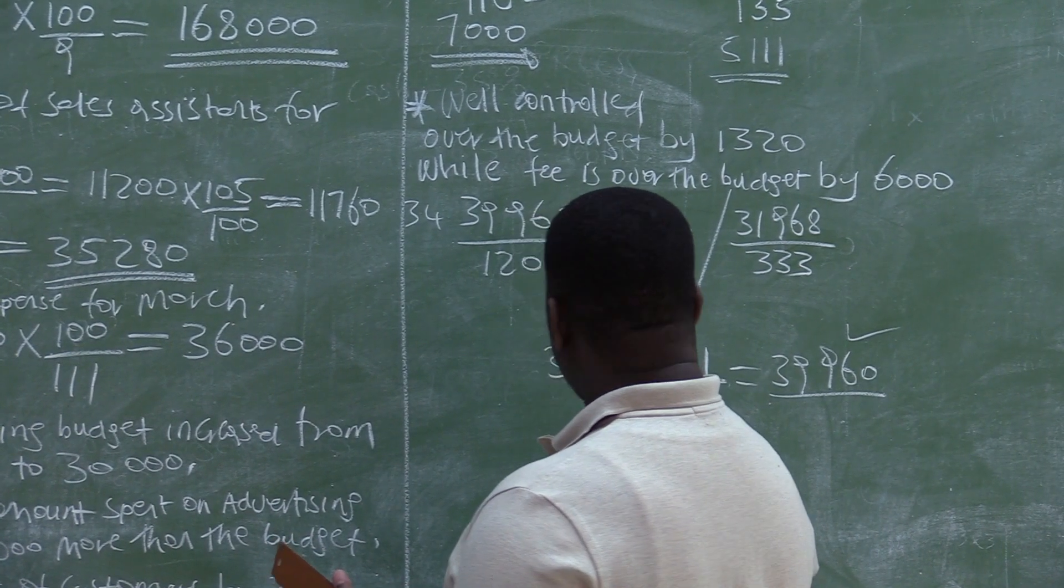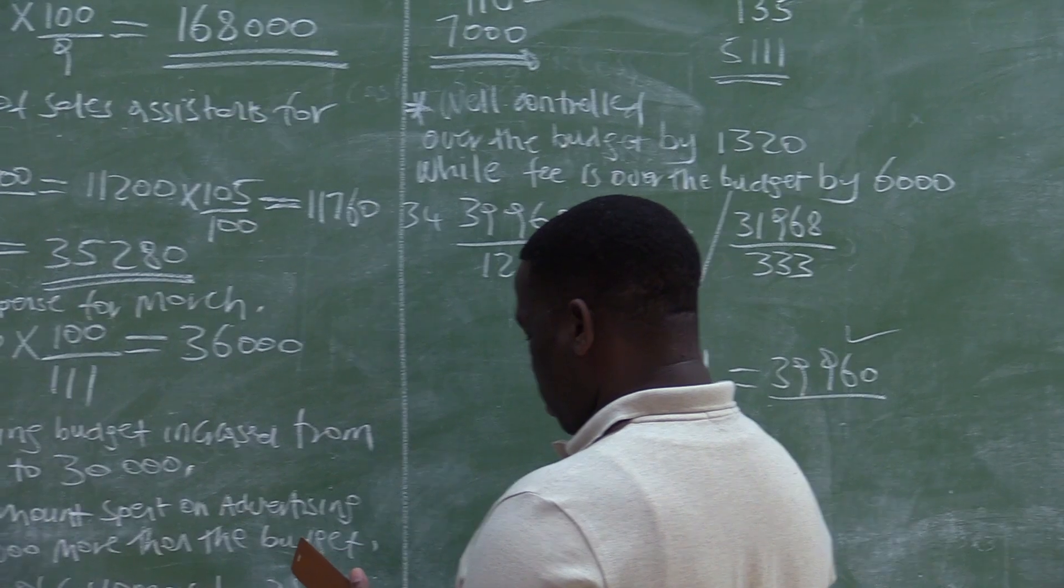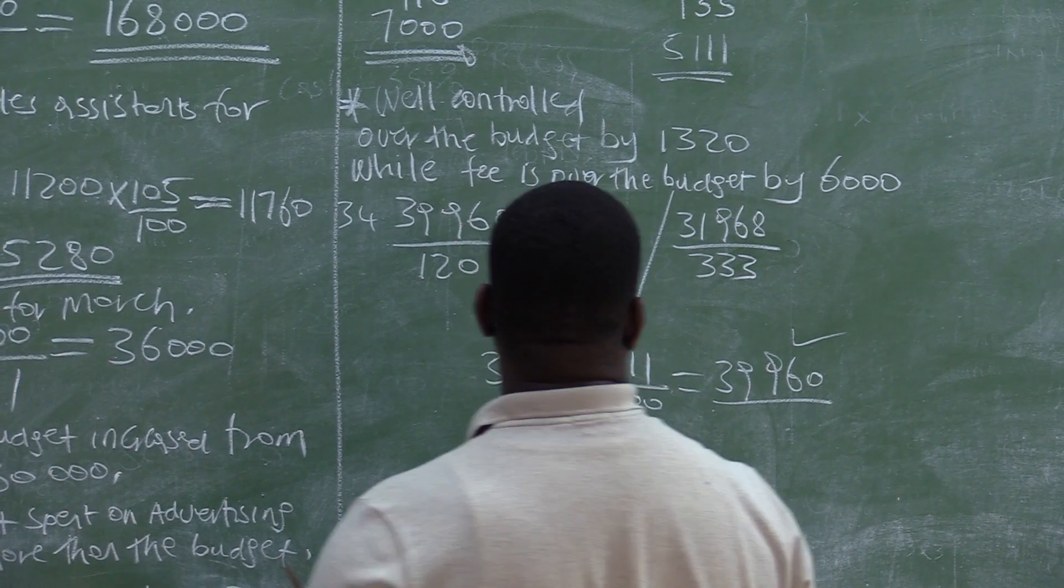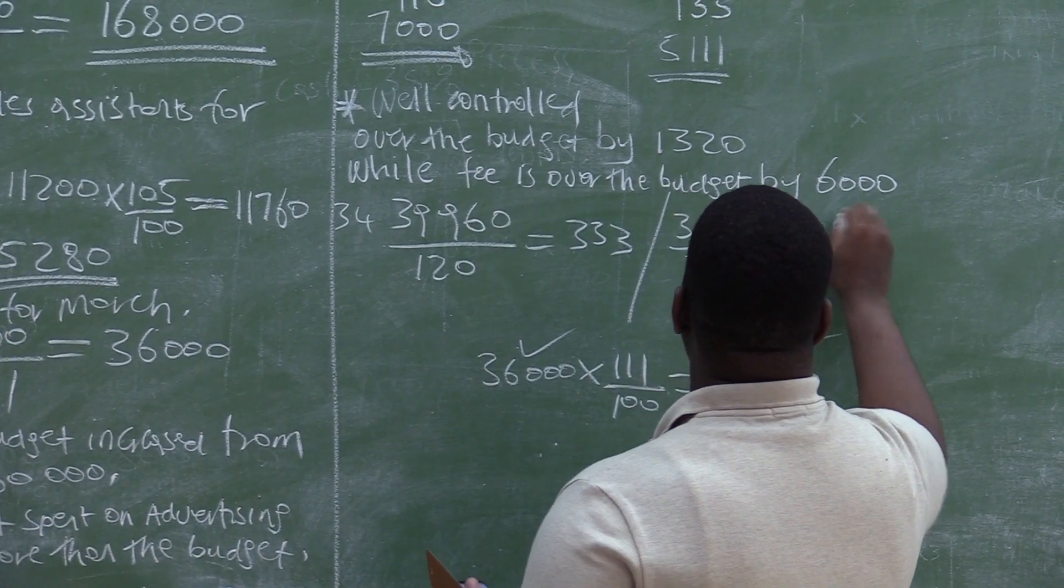$31,968. If we divide it by $333, we are getting now 96 square meters.